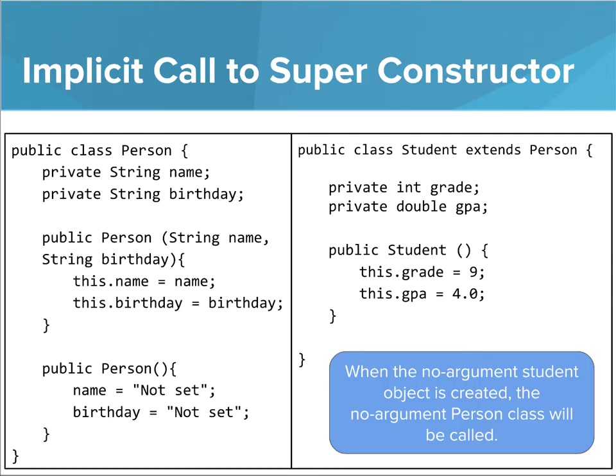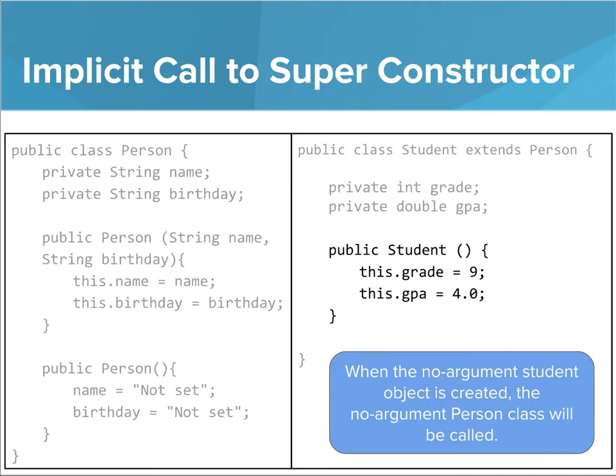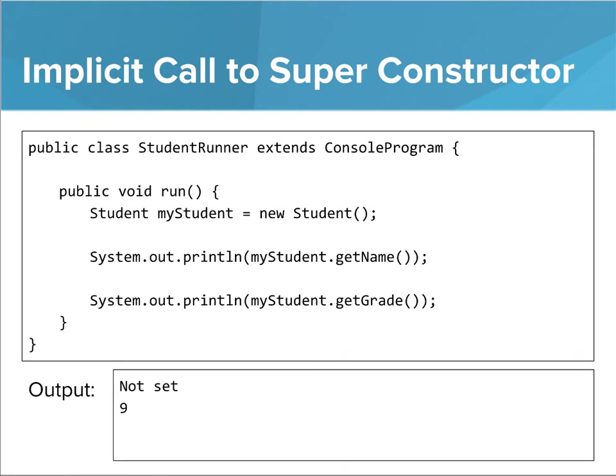When a subclass doesn't have an explicit call to the super constructor, the no-argument constructor is used. Let's look at how this plays out with a person-student hierarchy. Notice that the Student subclass doesn't make a call to the superclass constructor. Without this call, Java uses the no-argument constructor in the Person class. When the program is executed, the values are initialized by the no-argument constructor — instead of the name having a null value, it gets set to 'not set' per the no-argument constructor.